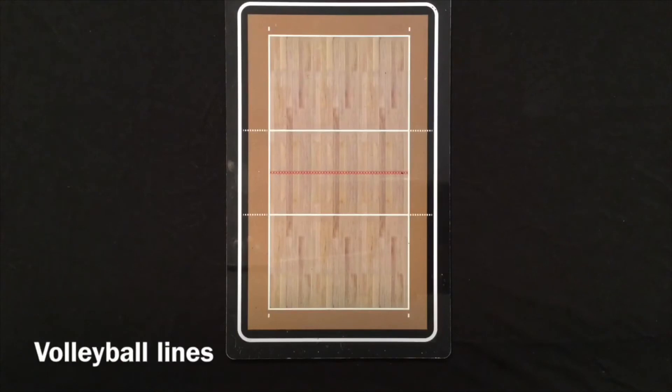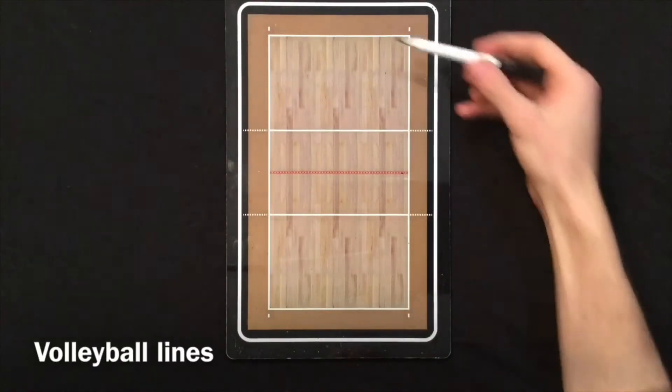We're going to start with the basic lines of volleyball. The first line is the end line. Obviously there's two.